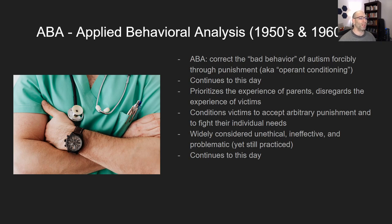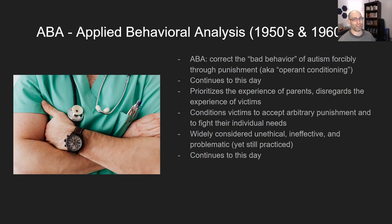A friend who worked with autistic children told me ABA is pure evil. One of the things it does is condition victims to accept arbitrary punishment from strangers and to suppress their individual needs, which makes them extremely vulnerable to abuse later in life. It is widely considered unethical, ineffective, and problematic by many groups of people, and yet it is still practiced to this day. There have been some strides to make it more humane, but the consensus is that ABA needs to go away.